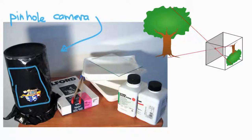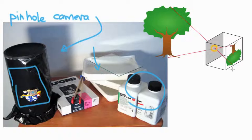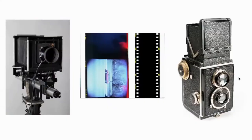They expose it to a little bit of light, take the paper out, pop it in these tubs with some chemicals, and then they have a photograph. It all works on this principle: you've got a little hole, light focuses through that hole onto the back of the oatmeal box, and you've got a picture.